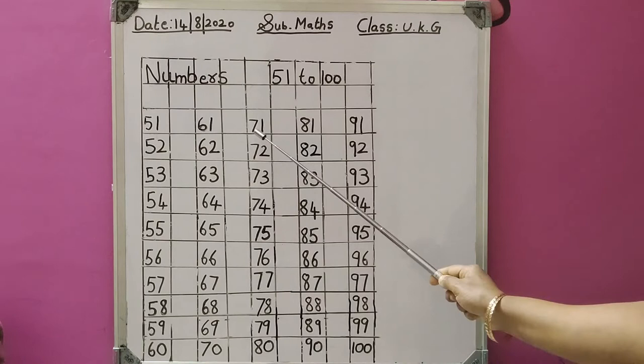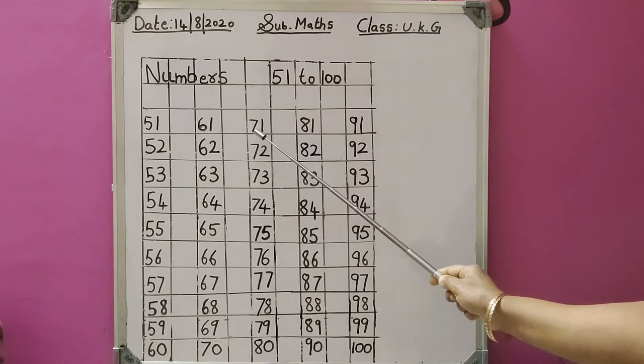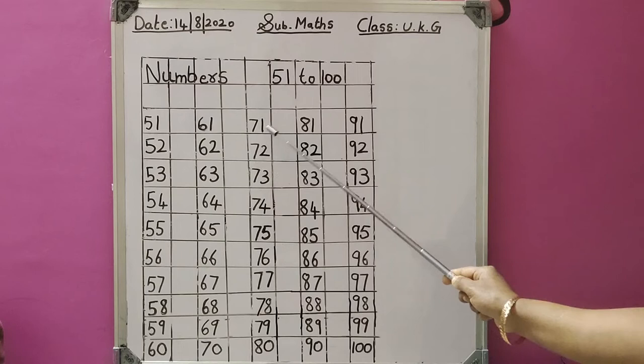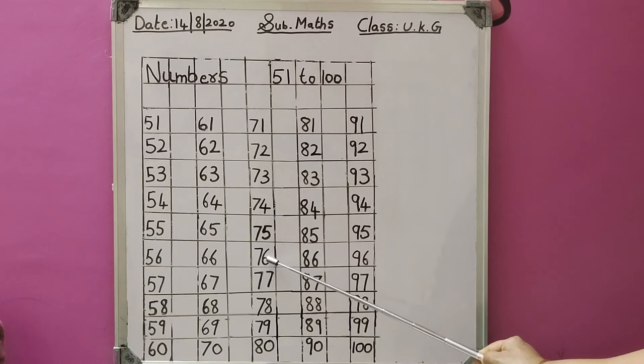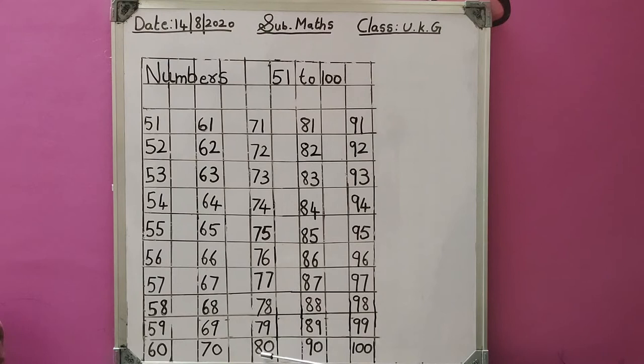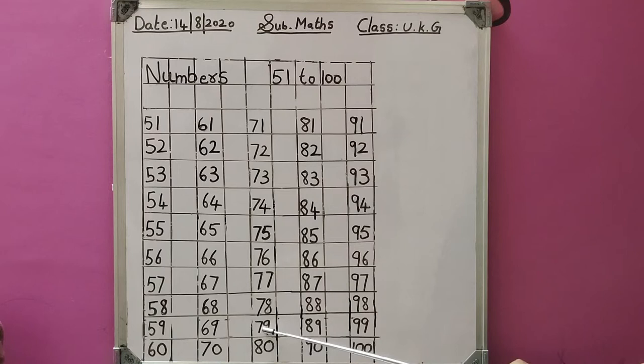In the next column: 71, 72, 73, 74, 75, 76, 77, 78, 79. After 79: 80.